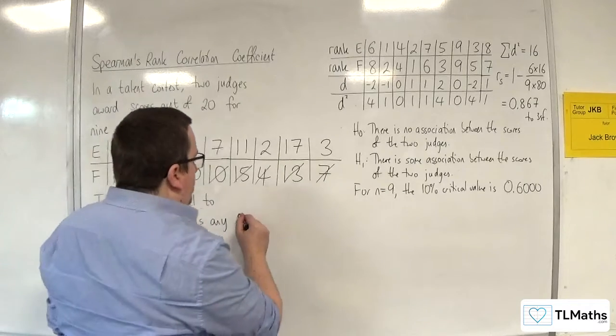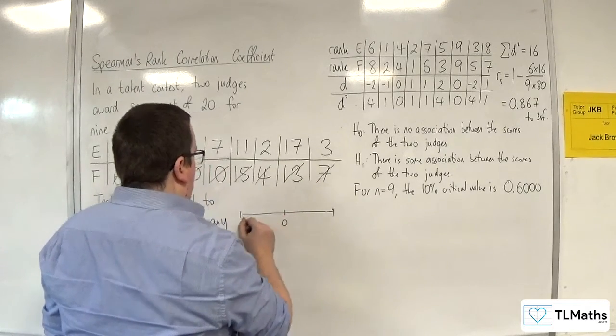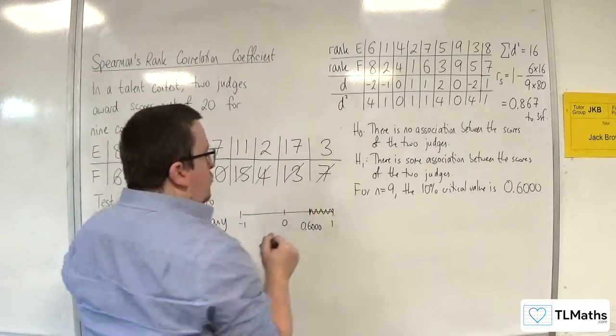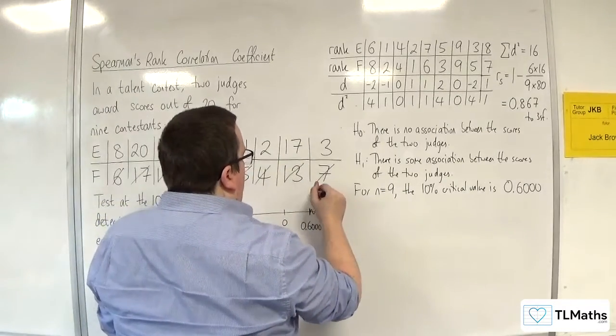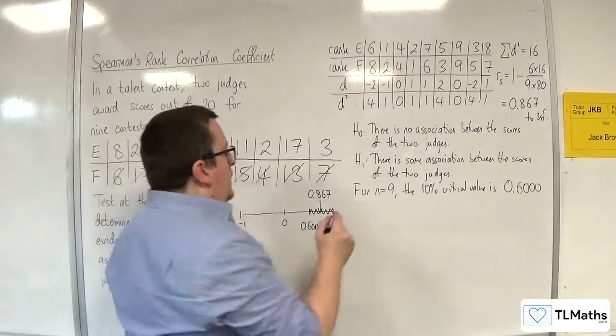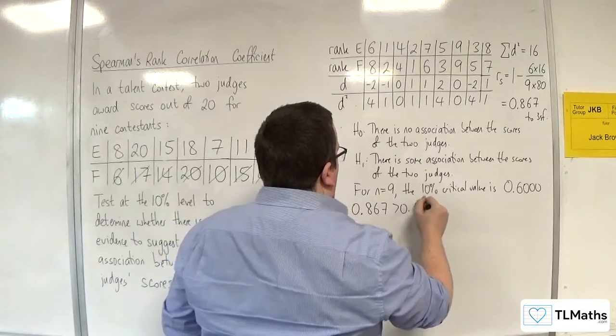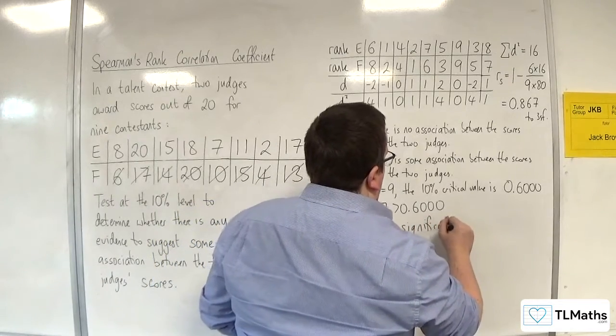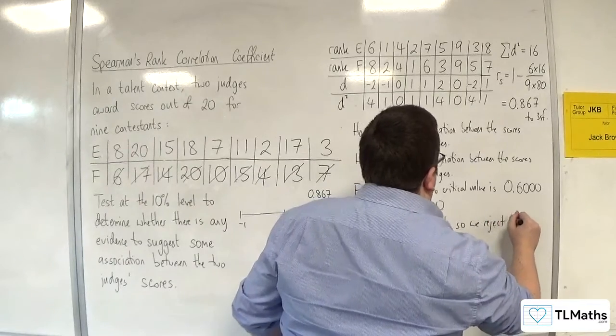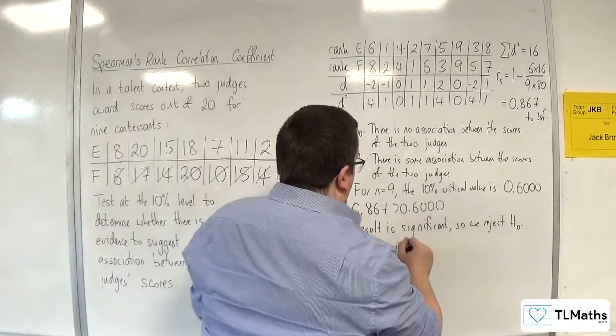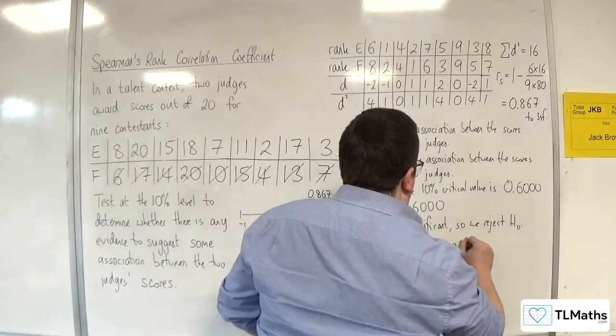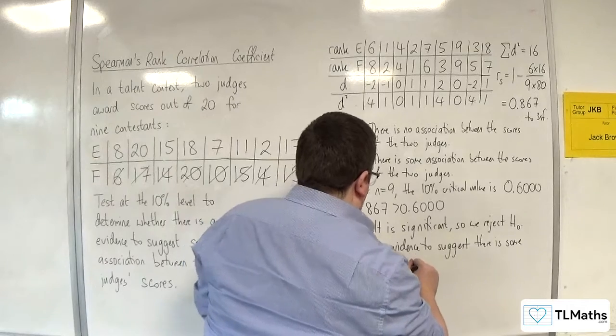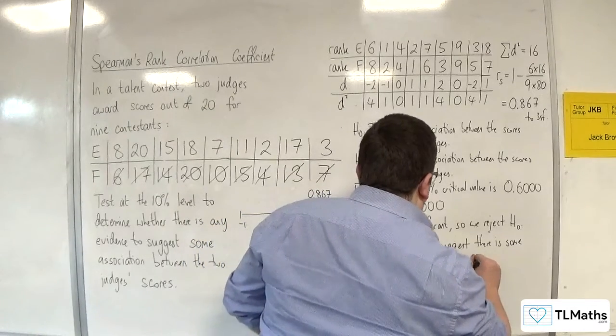If it helps, you can draw a number line. So 0.6 is about there. That is your critical region. The 0.867 is there, inside the critical region. So 0.867 is greater than 0.6000, so the result is significant. We reject H0. And say there is evidence to suggest there is some association between the scores of the two judges.